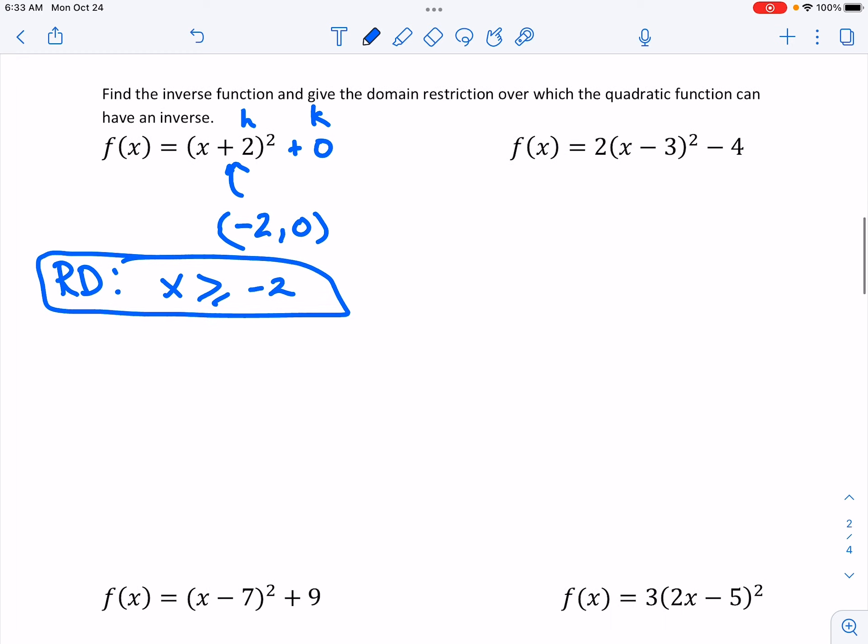Going through the steps. First we're going to switch our x and our y. So x equals y plus 2 squared. We switch the x and the y. We get the quadratic portion or the part that's under the square by itself. It is.